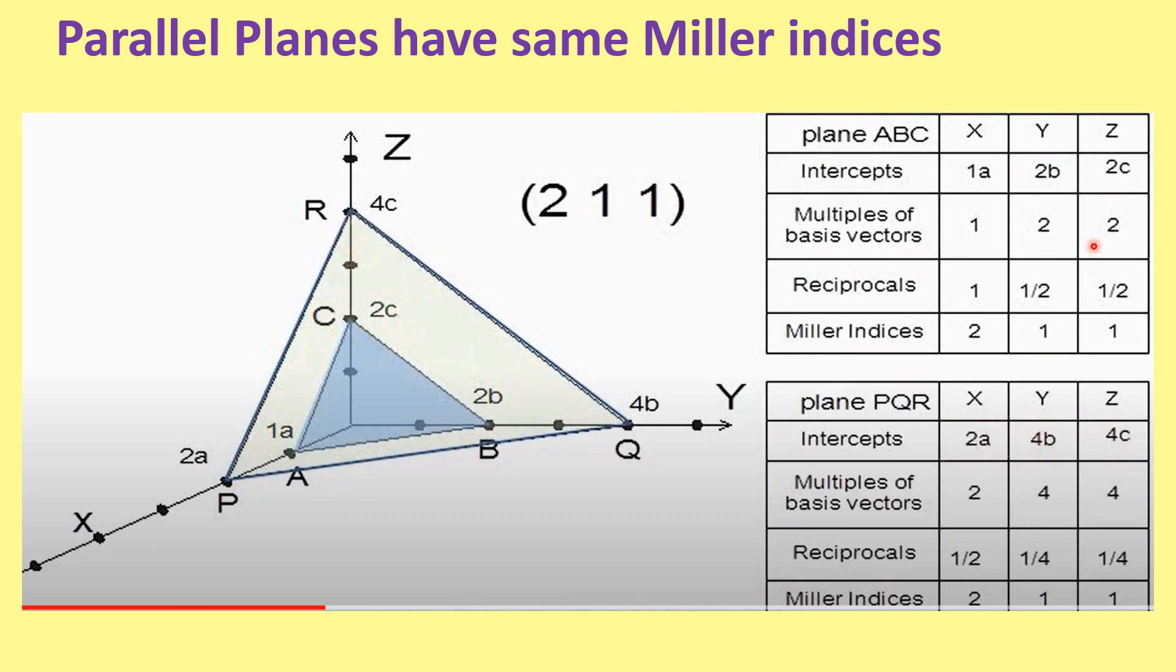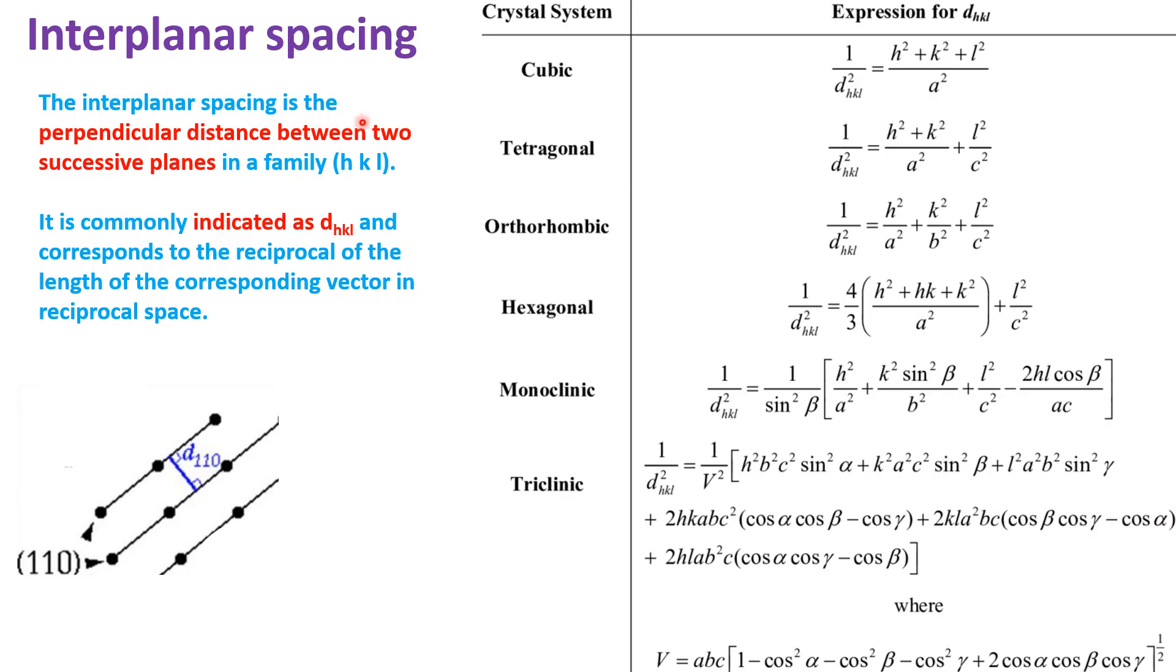The interplanar spacing is the perpendicular distance between two successive planes. We can see in this the perpendicular distance between two successive planes. It is known as the interplanar spacing and is denoted by d_HKL. It is the reciprocal of the length of this vector in reciprocal space, which we will discuss in X-ray diffraction in future lectures.